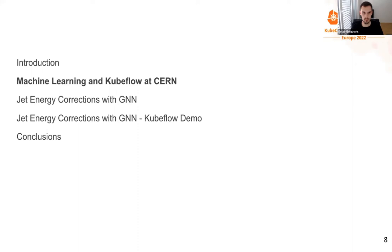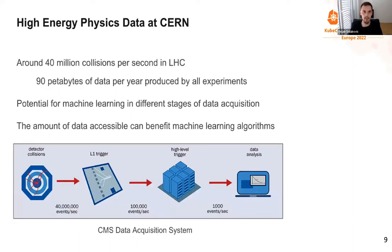There is a large amount of data at CERN. LHC collisions happen at 40 million per second, translating to around 90 petabytes of data per year. There is strong potential for machine learning at different stages of data acquisition — both early on to select which data is interesting, and later to extract valuable physics results.